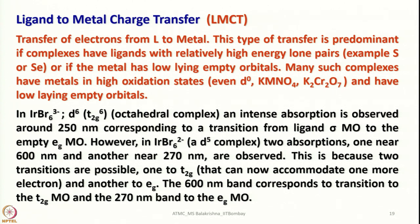If we consider hexabromoiridate(3−), it has a D6 electronic configuration with T2G6 in an octahedral complex. An intense absorption is observed around 250 nm corresponding to a transition from the ligand sigma molecular orbital to the metal T2G molecular orbital. However, hexabromoiridate(2−) is a D5 complex because iridium is in the +4 state. Two absorptions are seen — one near 600 nm and another near 270 nm — because two transitions are possible: one to T2G and another to EG.